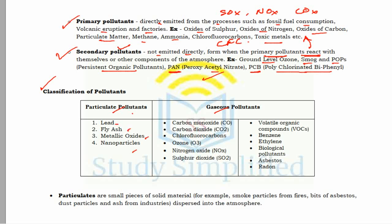Classification of pollutants includes particulate pollutants and gaseous pollutants. Particulate pollutants include lead, fly ash, metallic oxides, and nanoparticles. Gaseous pollutants include carbon monoxide, carbon dioxide, CFCs, ozone, NOx, sulfur dioxide, volatile organic compounds (VOCs), benzene, ethylene, biological pollutants such as pollen and fungal spores, asbestos, and radon. Particulate matter consists of small solid pieces such as smoke particles, bits of asbestos, dust particles, and ash from chimneys.